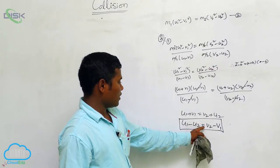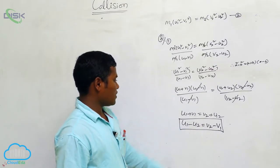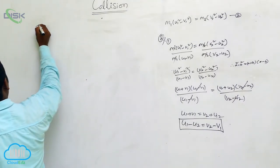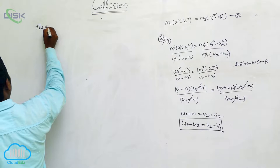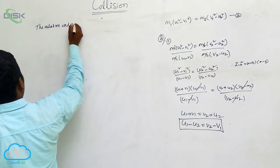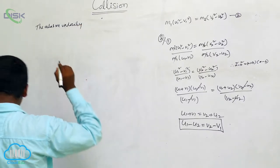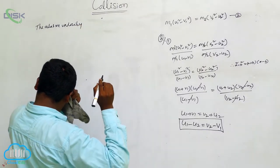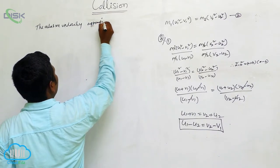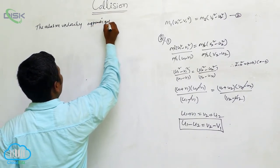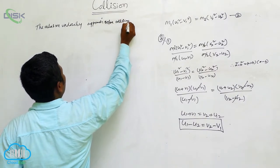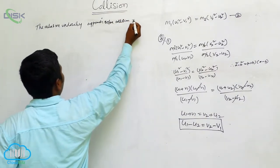V1 minus U2 is equal to V2 minus V1. What is that meaning? In words I am writing: the relative velocity of approach before collision is equal to the relative velocity of separation after collision.